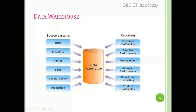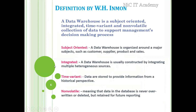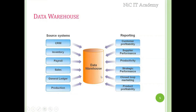This is the functional architecture of our data warehouse. Here we are having CRM (Customer Relationship Management), inventory, payroll, sales, general ledger, production - all the data we will be collecting from source and moving into a data warehouse. From the warehouse, we'll be taking different metrics - customer profitability, supplier performance, productivity and strategic performance, close loop marketing, product profitability.